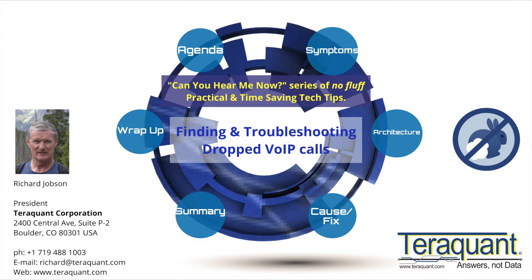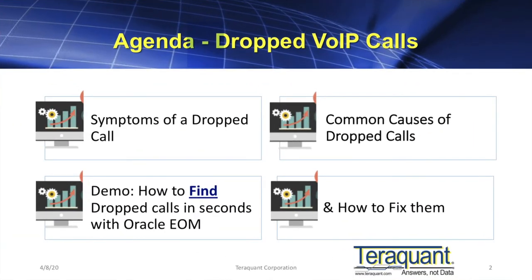Let's get started. Today's agenda: we're going to show you how to find dropped calls on a wired VoIP network — not a cellular network, but a VoIP network. We'll cover the symptoms and common causes of dropped calls, then show you a quick demo on how to find them in seconds with Oracle's EOM, a SIP monitoring solution which TerraQuant introduced to the market back in 2008.